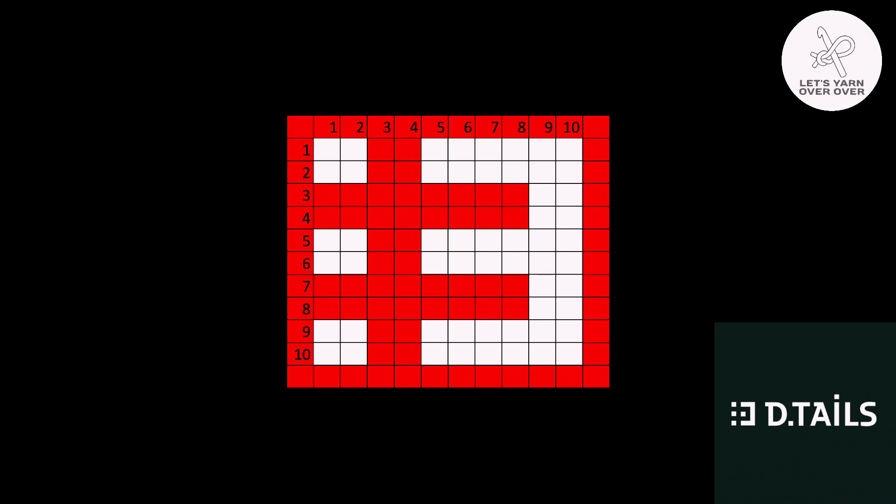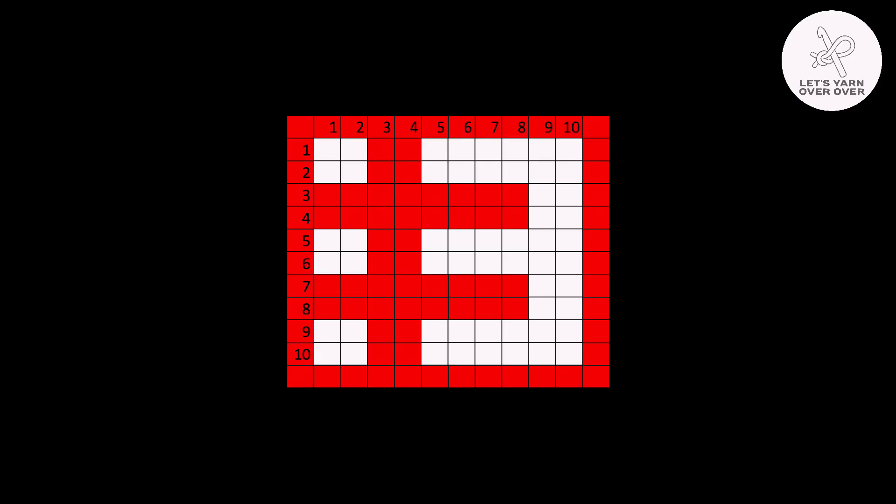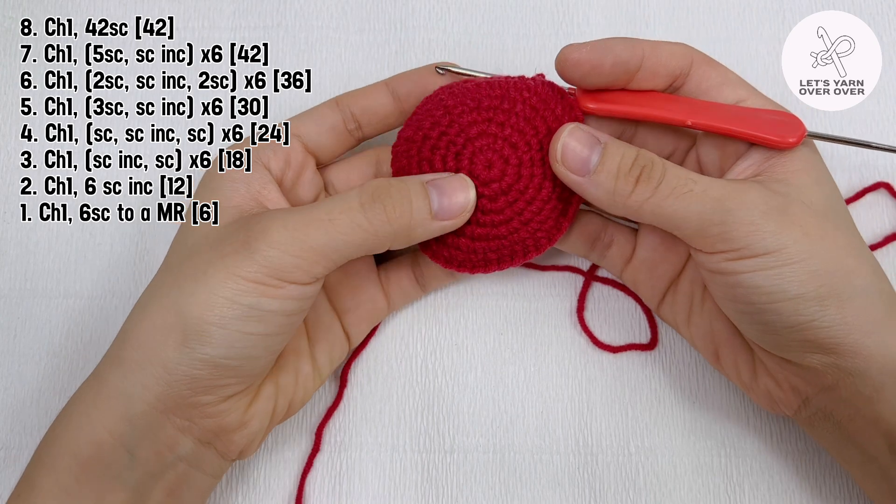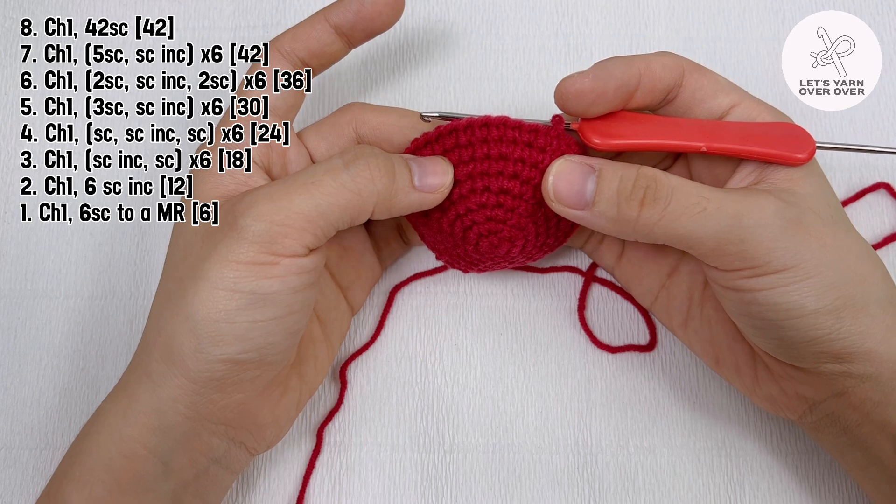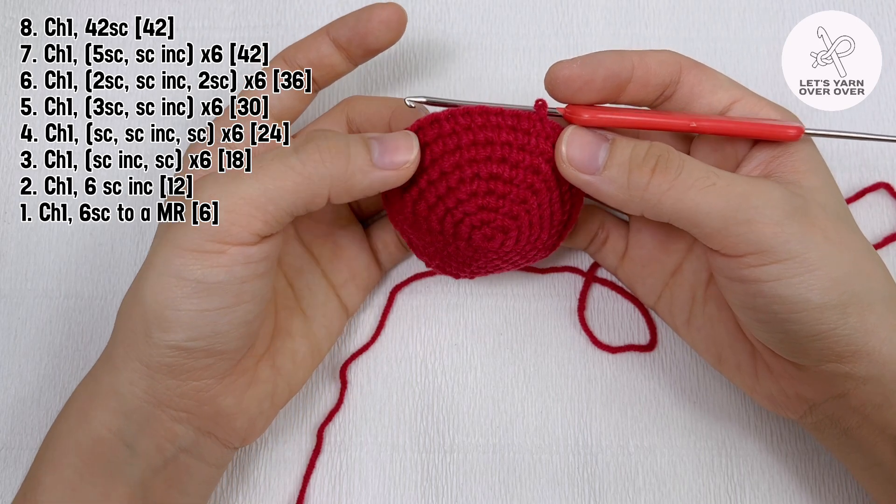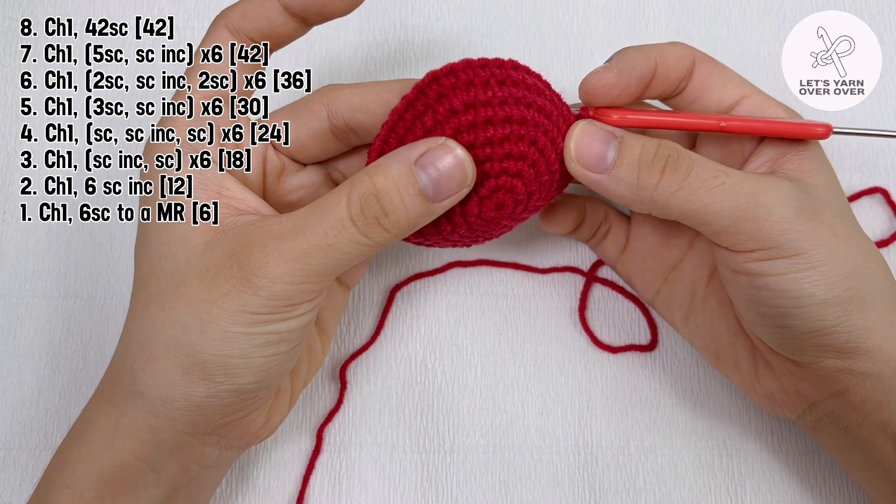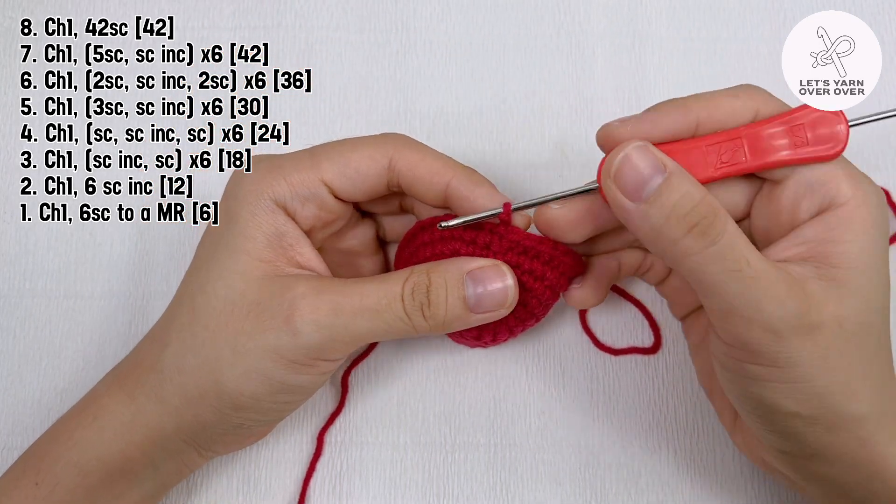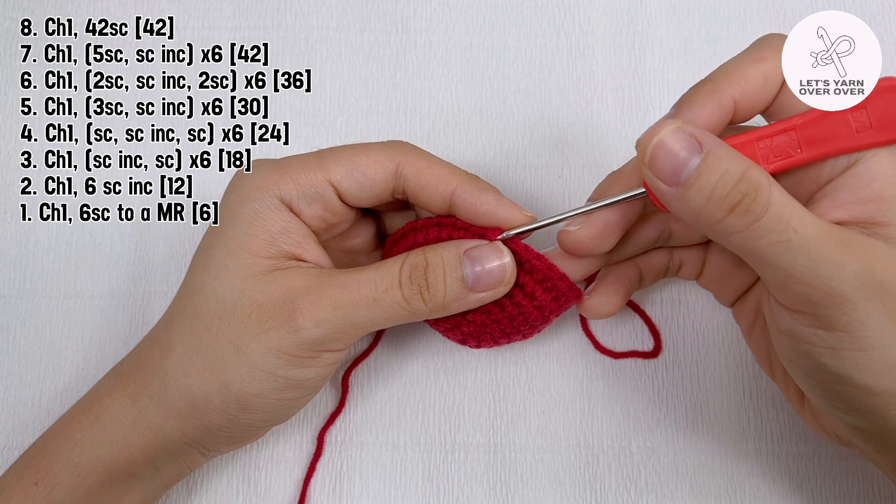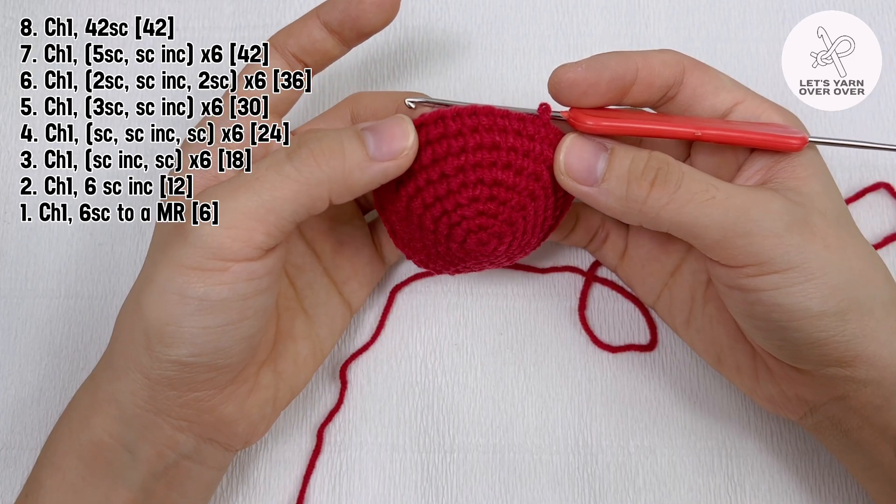If I start this project with 6 single crochet works to a magic ring, I will increase 6 stitches in every round for the first 7 rounds so that the width is 42, which is close to 40. I have just finished round 8 as well with 42 single crochet.